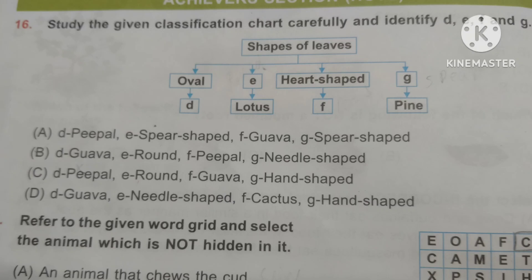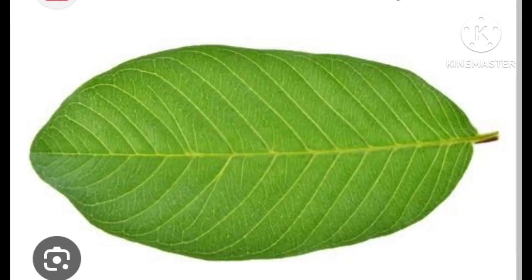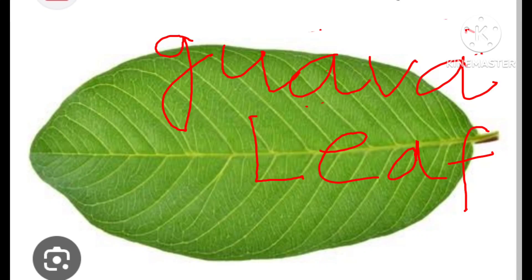So the option for F with heart-shaped leaves, you have to select that. And G is pine plant, so you have to tell the shape of the pine plant. I am showing a chart of shapes of leaves here: hand-shaped leaves is of maple, peepal leaves is heart-shaped, guava is oval-shaped, lotus leaves is round-shaped, and pine leaves are needle-like. From this chart you can solve this question very easily, so you can take a screenshot of this flowchart.